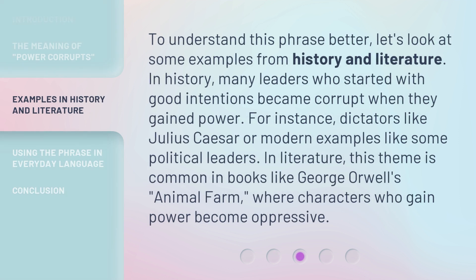To understand this phrase better, let's look at some examples from history and literature. In history, many leaders who started with good intentions became corrupt when they gained power — for instance, figures like Julius Caesar, as well as modern political leaders. In literature, this theme is common in books like George Orwell's Animal Farm, where characters who gain power become oppressive.